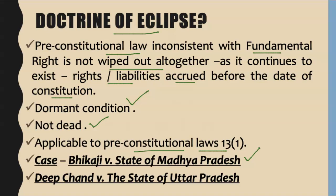Another important case is Deepchand versus State of Uttar Pradesh. The Supreme Court held that a post-constitutional law made under Article 13 clause 2 which contravenes a fundamental right is a nullity from its inception — a stillborn law. The doctrine of eclipse is not applicable to post-constitutional laws because they are stillborn and are nullity from their inception. Even if a constitutional amendment is later brought to revive it, this will not be valid — it will have to be re-enacted.